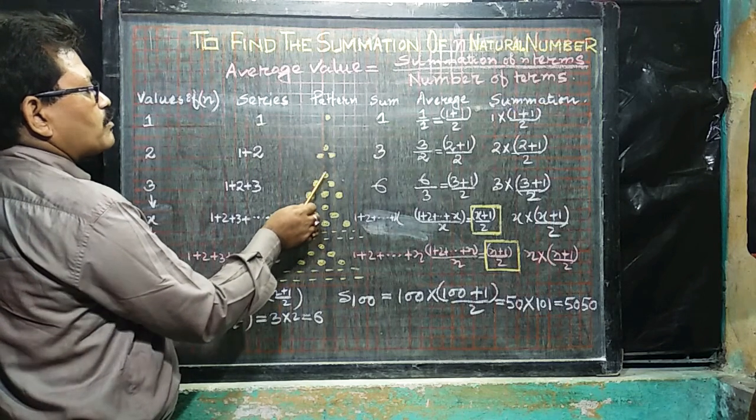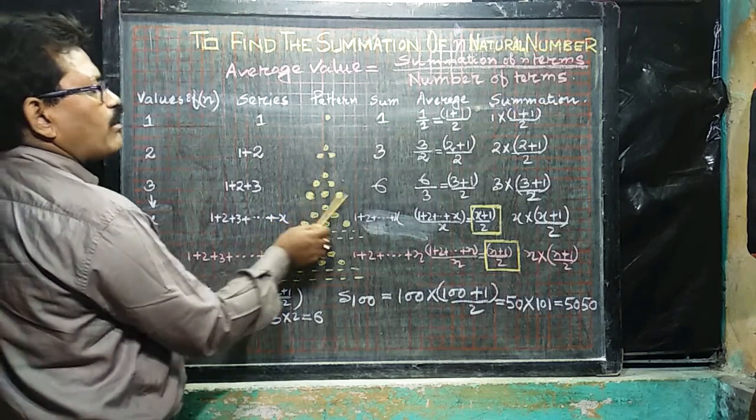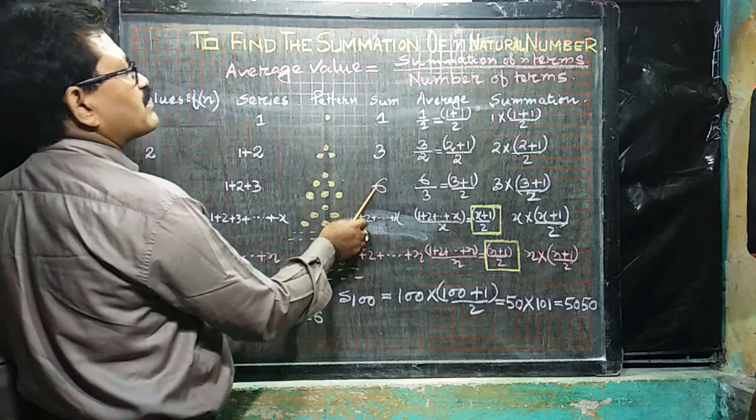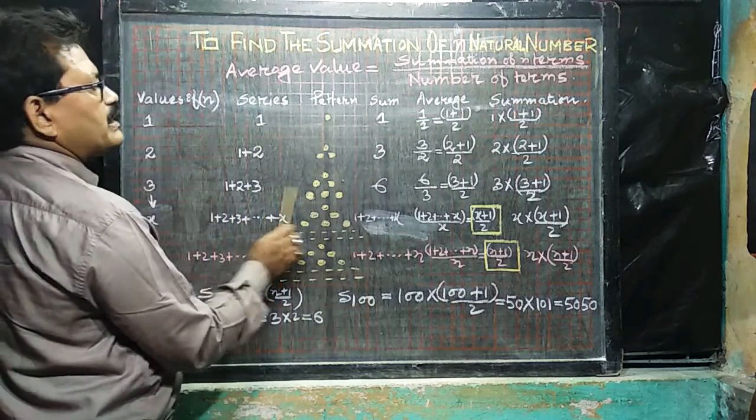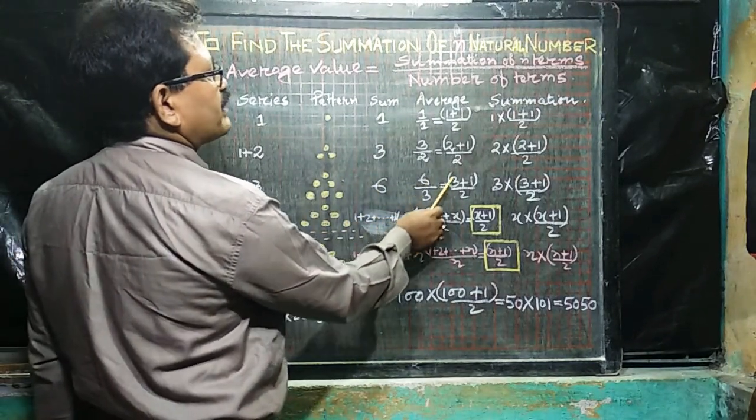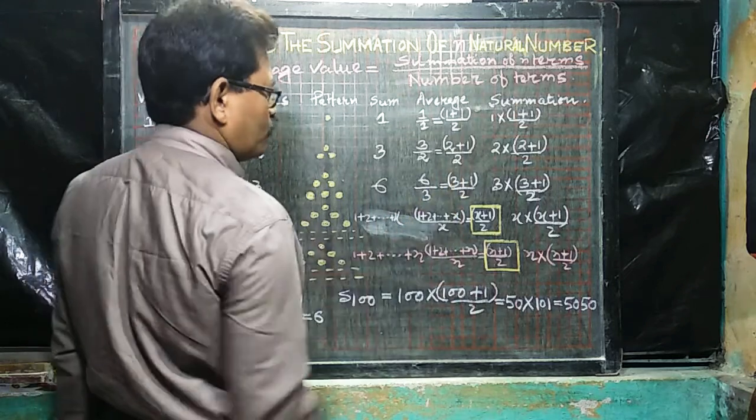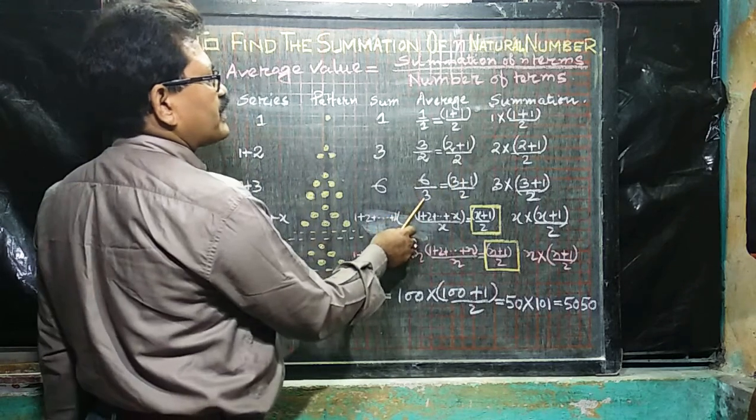1 plus 2 plus 3. The pattern is like this, 1 dot, 2 dot, 3 dot, that is, total number is 6. That is, the summation of 1 to 3 is 6. Now, the average is 6 by 3, that is 3 plus 1, divided by 2. 6 by 3, that is 2.